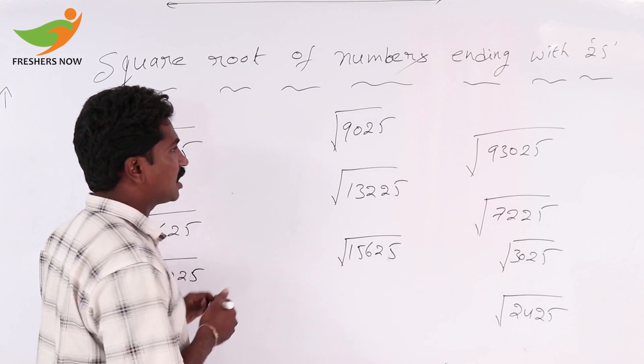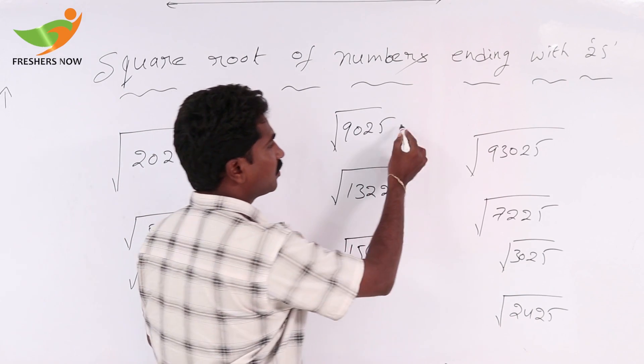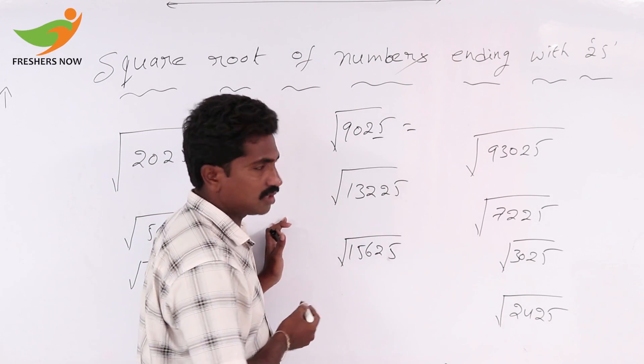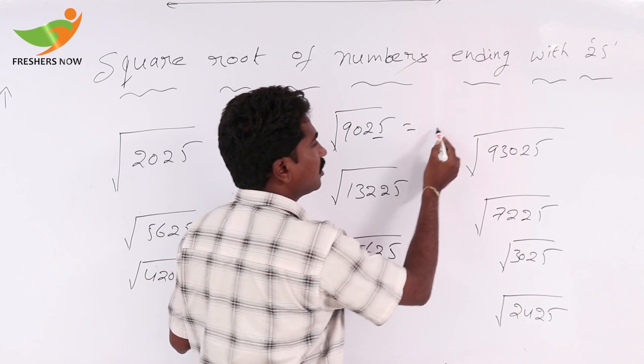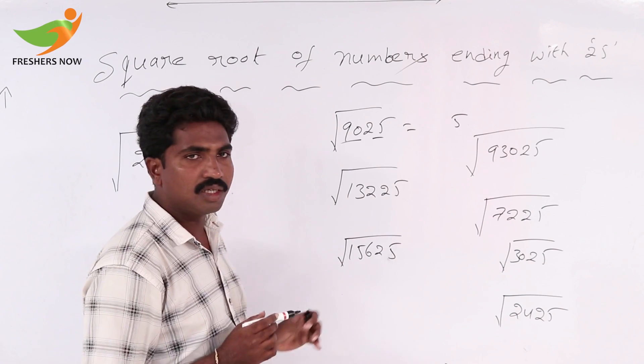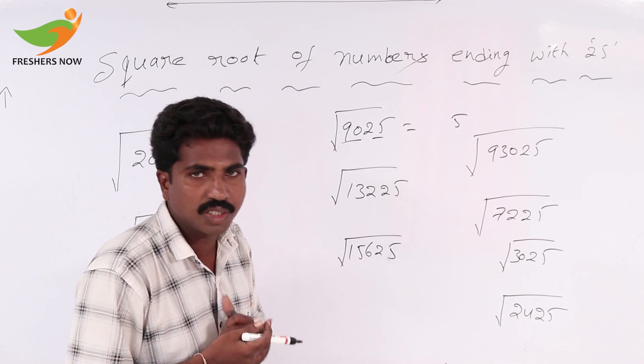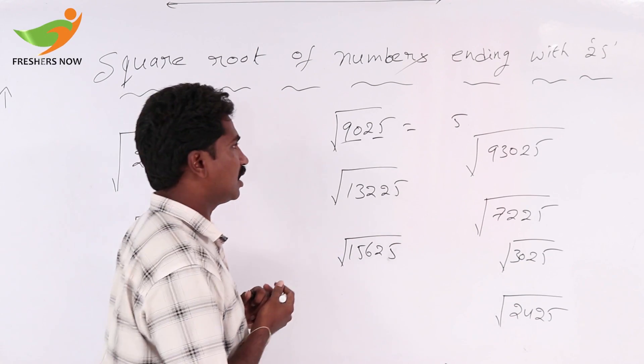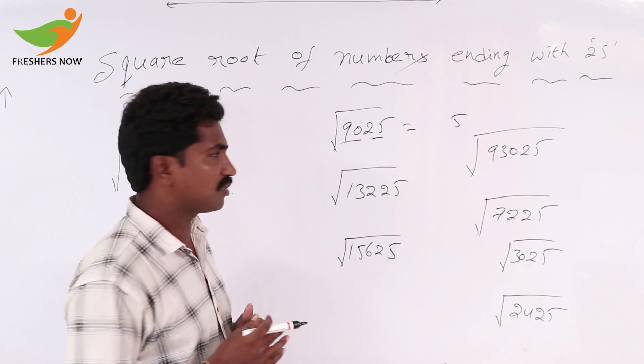So there is a condition. If we take 9025, here 25 is there. Here the square root of 25 is 5. Later we write 90. Can we write 90 into the multiple of two consecutive numbers? Like x into x plus 1.